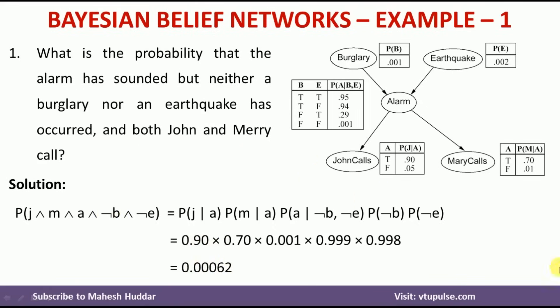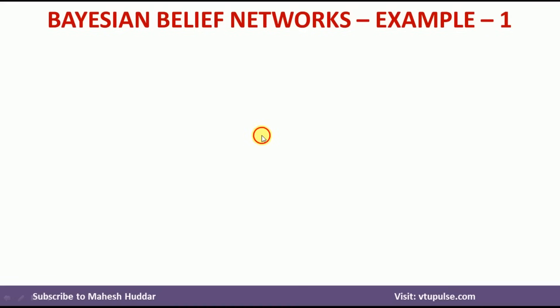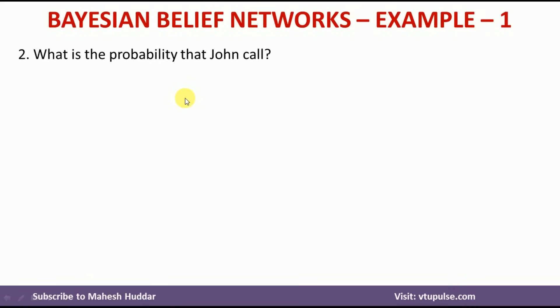Similarly, we need to answer one more question: what is the probability that John has called? In this case, we have been given only one event — that John has called. We do not know anything about the other events, that is Mary, alarm, earthquake, and burglary. So we need to consider the Bayesian belief network and solve this particular question.